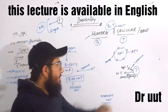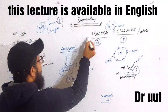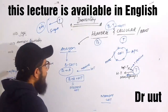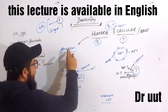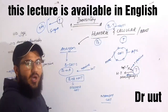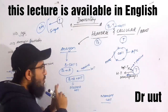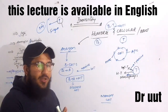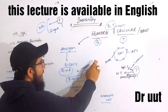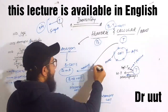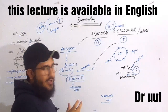Humoral immunity is related to the blood. When an antigen enters your blood, the B cells are activated — they are antigen binders. B cells can identify the antigen, but when they need help, they receive assistance from helper T cells.